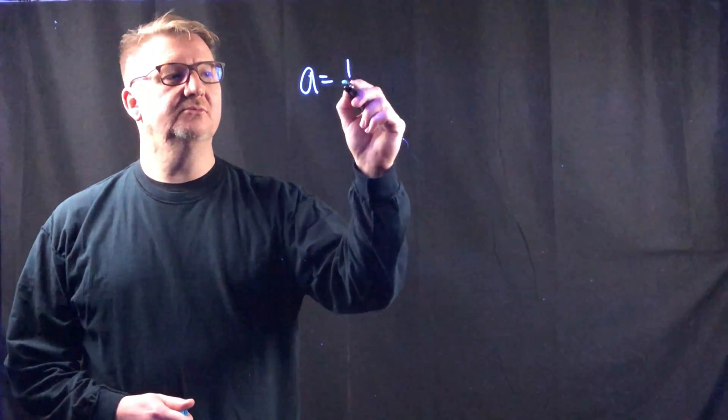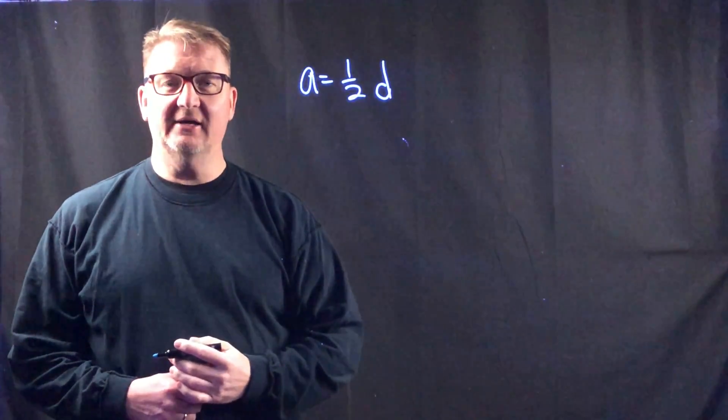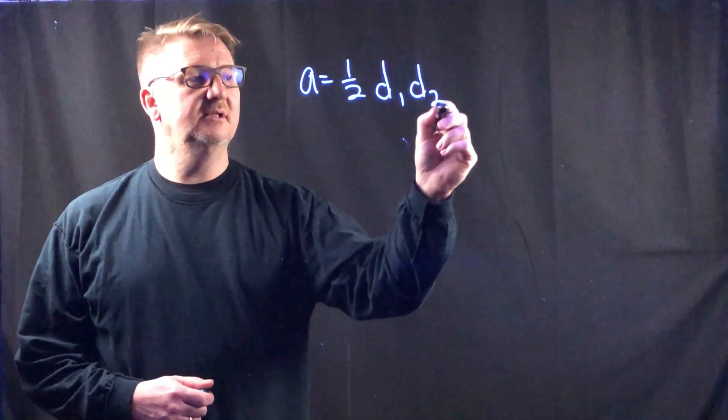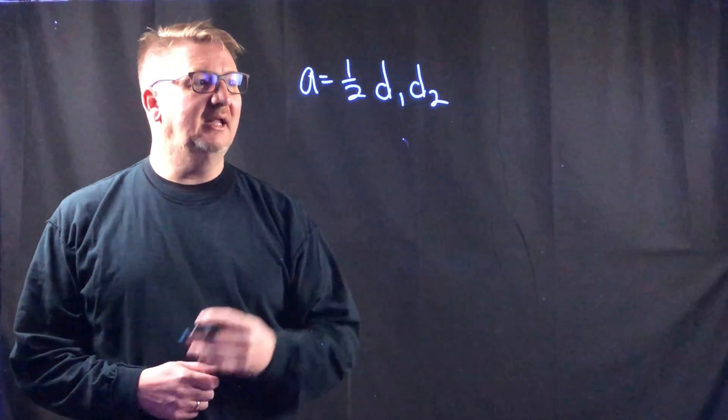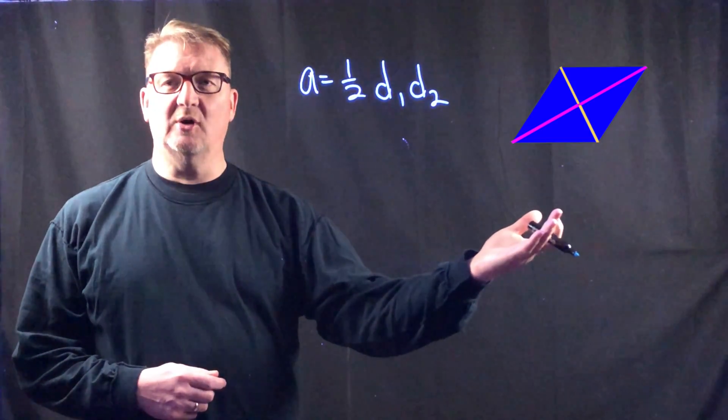The formula to find area of a rhombus is area equals one-half times the diagonal one times diagonal two. Now you may have no idea what I'm talking about here, so I'm going to show you how it works with this rhombus right here.